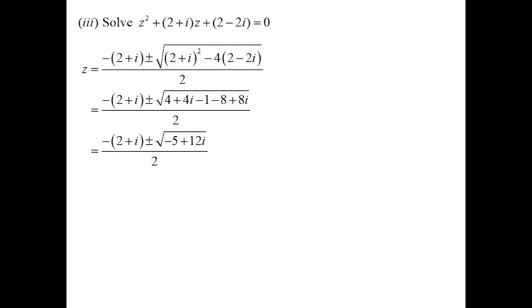Okay, sub it into the quadratic formula. Negative B, so that's negative 2 plus i. Plus or minus the square root of B squared, 2 plus i squared. Minus 4AC. Oh, thank goodness it was one. 4 times 2 minus 2i. Expanding it all out and tidying it up, we get minus 2 plus i. Plus or minus the square root of minus 5 plus 12i.